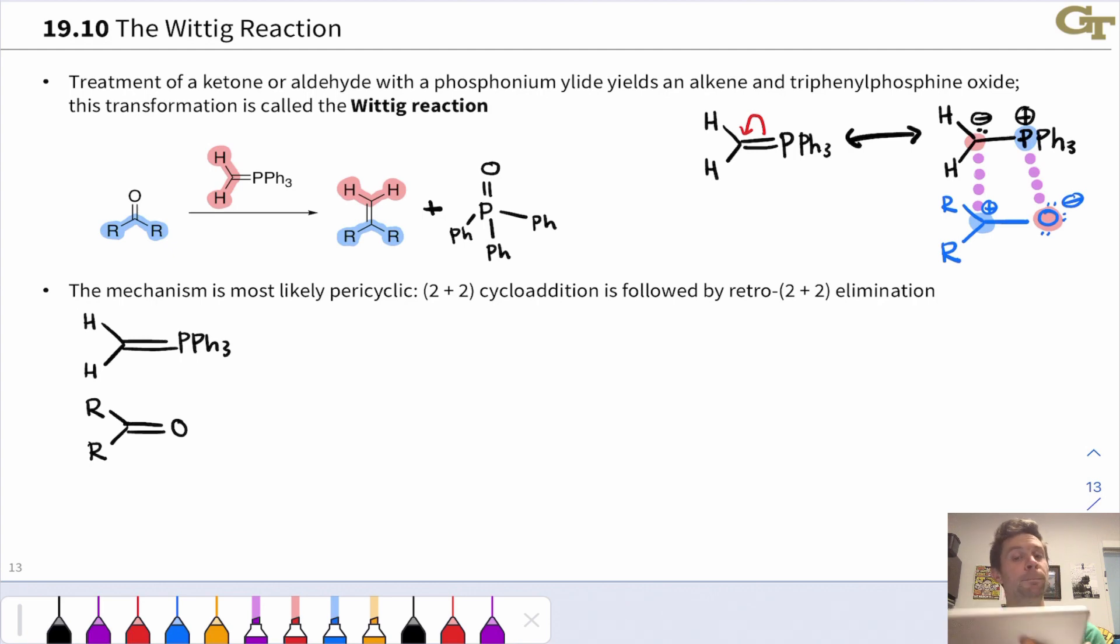The mechanism is most likely pericyclic. If you look online, you may see stepwise mechanisms for the Wittig reaction. It's actually a bit unclear how the reaction operates. It can depend on the specific structure of the ylide and the reaction conditions. But as a general thing to keep in mind, thinking of this as a kind of [2+2] cycloaddition is helpful. With electron flow like this, the C=O pi electrons heading to a P=O bond and the C=P pi electrons heading into a C=C bond. The result is a four-membered ring via a [2+2] cycloaddition.